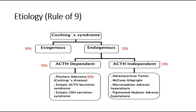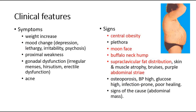For clinical features of Cushing's syndrome, symptoms include weight gain, mood changes, proximal weakness where the patient cannot lift their arms or reach things above them, gonadal dysfunction in both males and females, and increased acne. For signs, we can look for central obesity, plethora, moon face where the face is rounded, buffalo hump at the neck, and supraclavicular fat pads. We also check the abdomen for any abdominal striae and any abdominal mass.